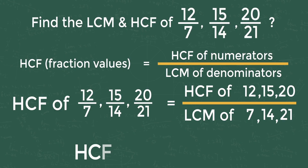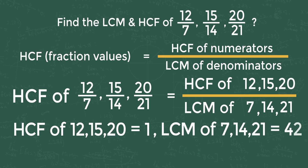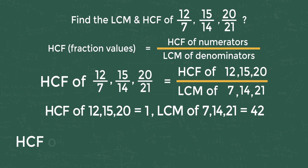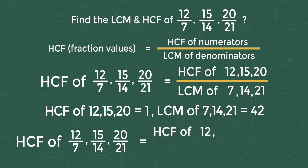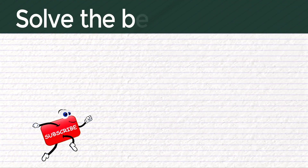HCF of 12, 15, 20 is equal to 1. LCM of 7, 14, 21 is equal to 42. So HCF of 12/7, 15/14, 20/21 equals 1 divided by 42. The answer is 1/42. This is simple if you know the trick!